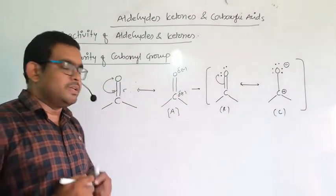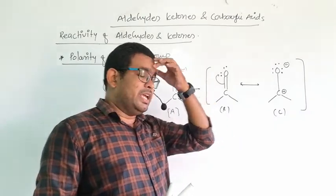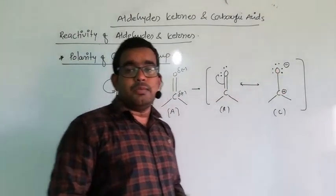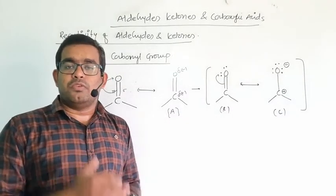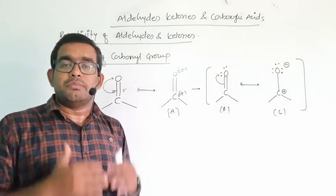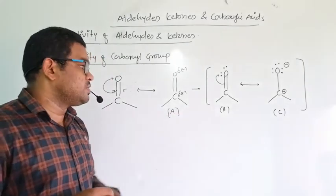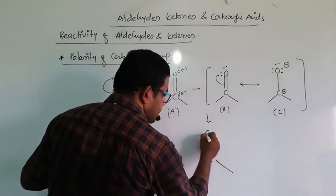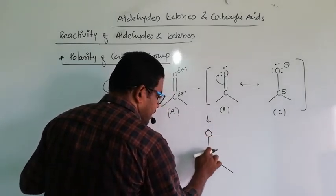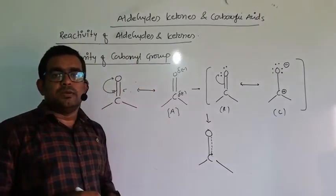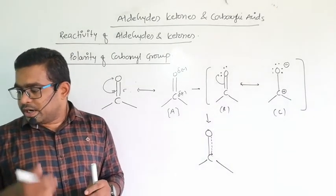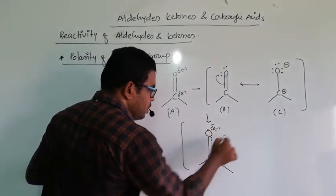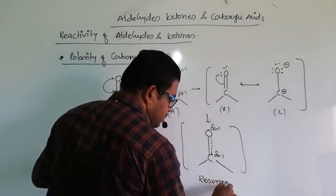These structures A, B, and C are different forms of the carbonyl group — they are all the same molecule. Comparing the first and last structure, in one it appears as a double bond and in the other as a single bond. Since the molecule exists in more than one form, it undergoes resonance. Combining all structures A, B, and C, we get one final structure called the resonance hybrid, shown with a dotted line indicating the bond is neither completely single nor completely double.